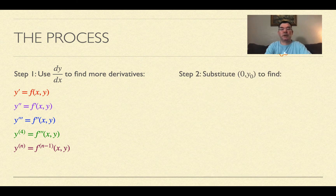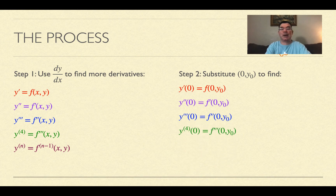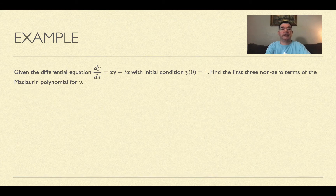Once we've found as many derivatives as we need, we replace x with zero and replace y with the value given as y₀. So y prime at zero is what we get when we plug zero and y₀ into f. The same applies to all the derivatives — we're just plugging in that x and that y into every derivative we need. We'll be told how far to take those derivatives, and we'll work from there.